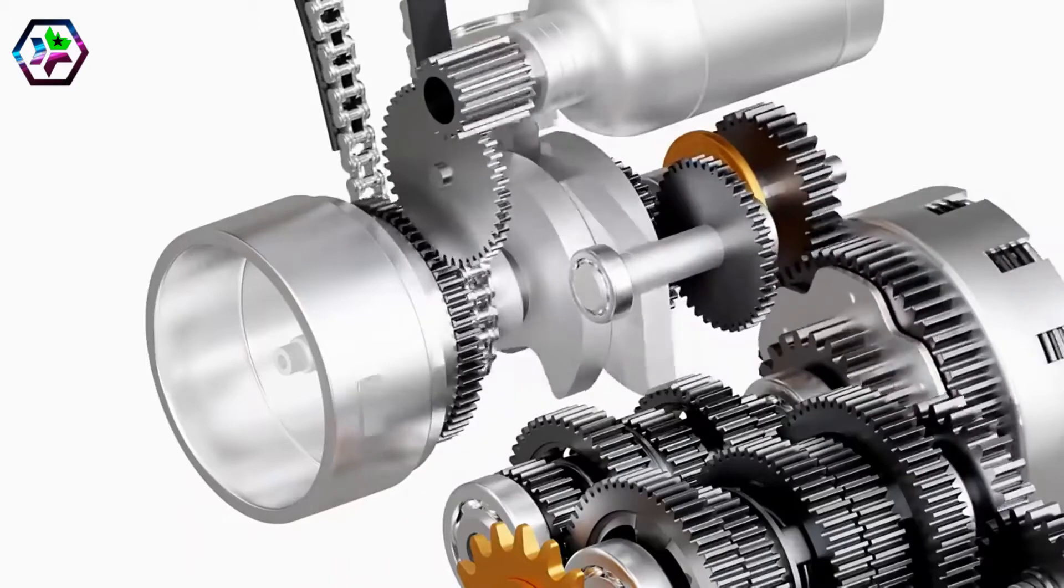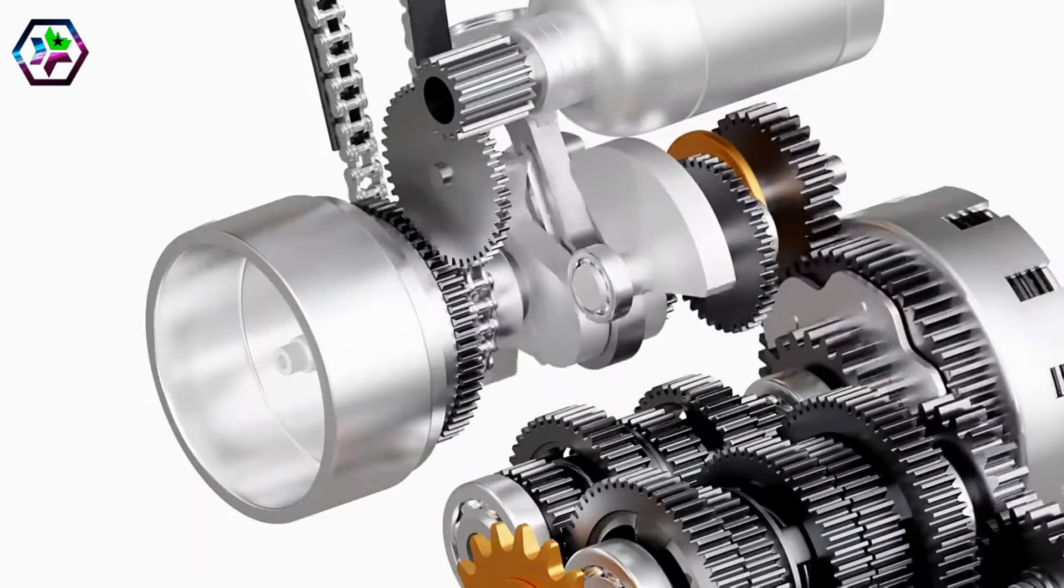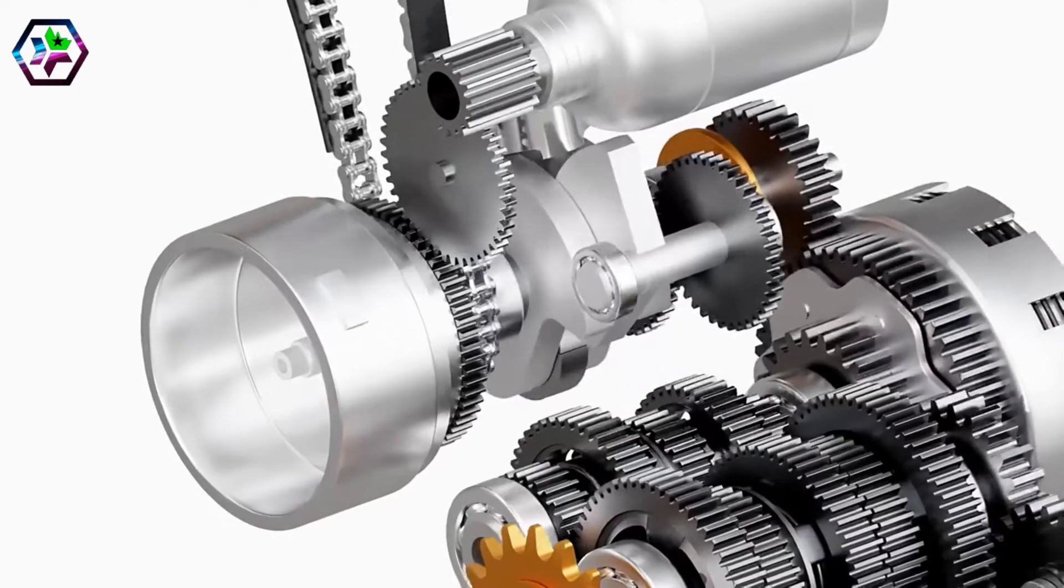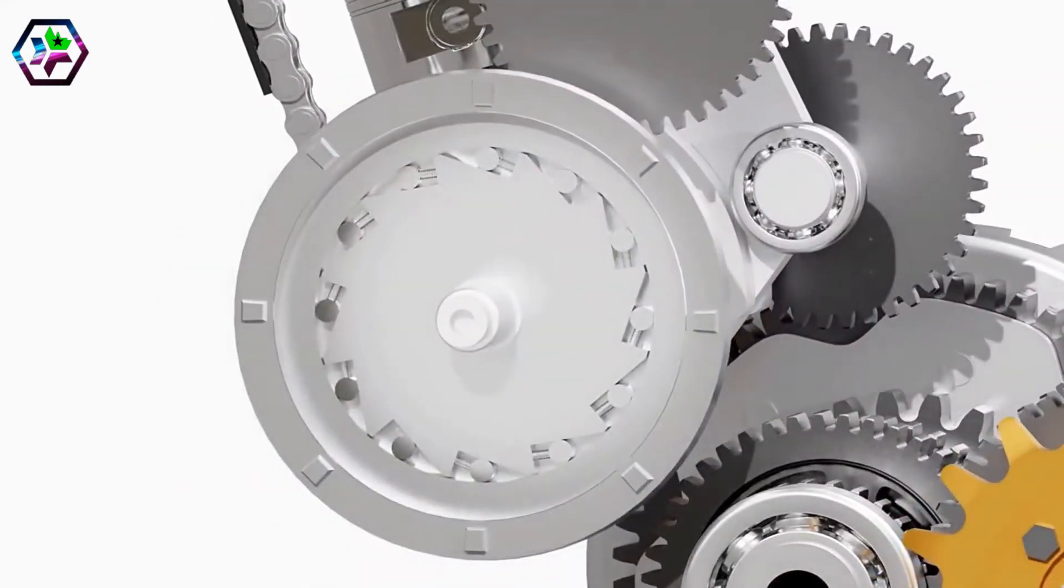Once the engine is started, the starter motor has to be disengaged from the crankshaft to prevent damage due to excessive speed. This is achieved by using a one-way clutch.